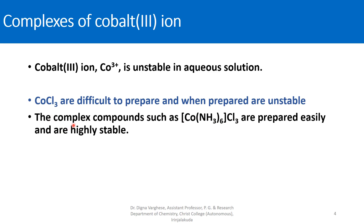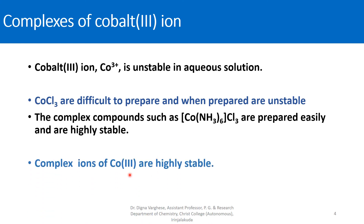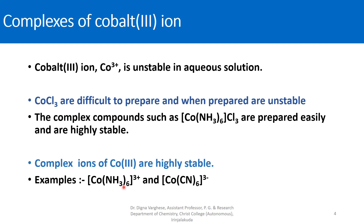But its complex compounds, such as Co(NH3)6Cl3 — that is hexamine cobalt(III) chloride — are prepared easily and are highly stable. The cobalt(III) ion is unstable, but when complexed with certain ligands it forms a highly stable compound. Examples include hexamine cobalt(III) ion and hexacyanidocobaltate(III), in which the cobalt(III) oxidation state is stabilized.